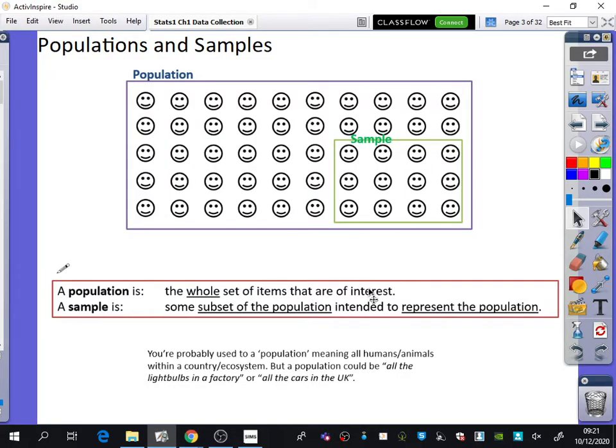You're probably used to 'population' meaning all humans or animals in a country or ecosystem. But in statistics, a population could mean other things—all light bulbs in a factory or all cars in the UK. Population doesn't mean people or animals in statistics; it means all things in the particular group we're looking at.